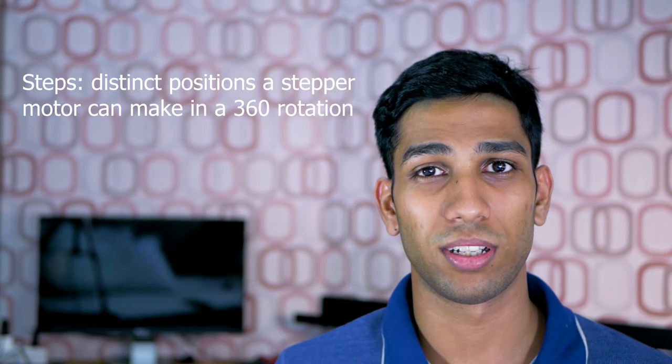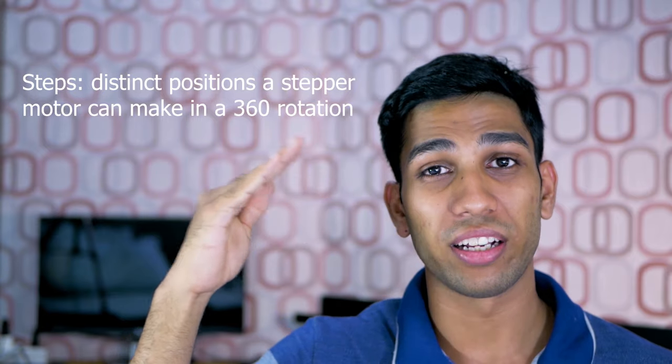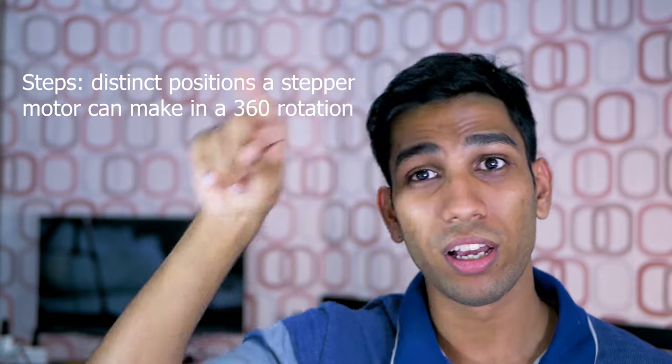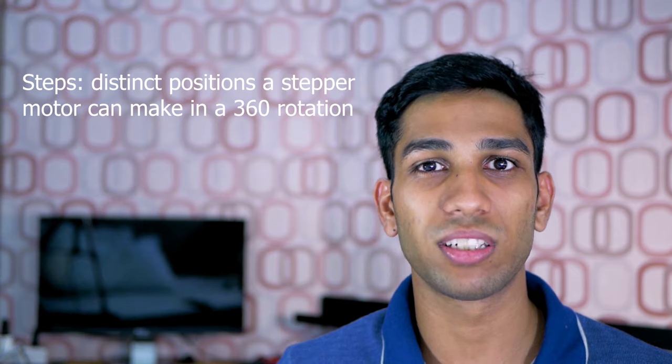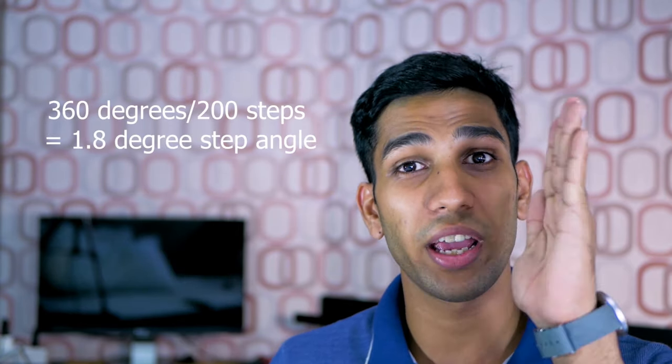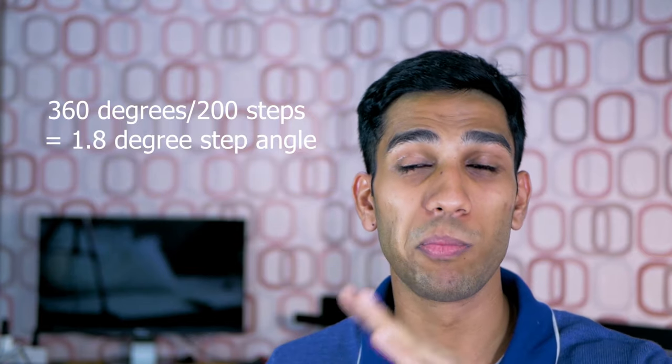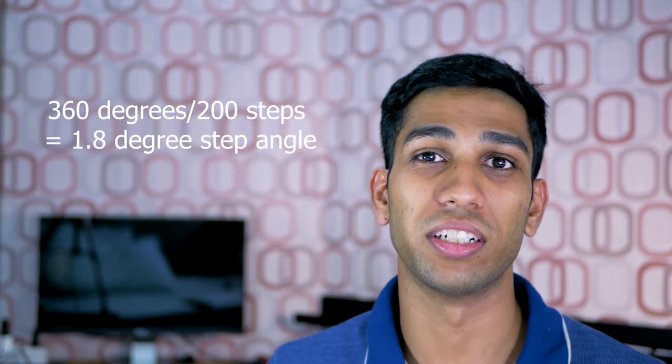Now unlike traditional motors, stepper motors are rated in something called steps. Steps refers to the distinct position that a stepper motor can make in one 360 degree rotation. That means a 200 step motor, such as the one I'm holding here, can make 200 individual increments of movement within a 360 degree turn.